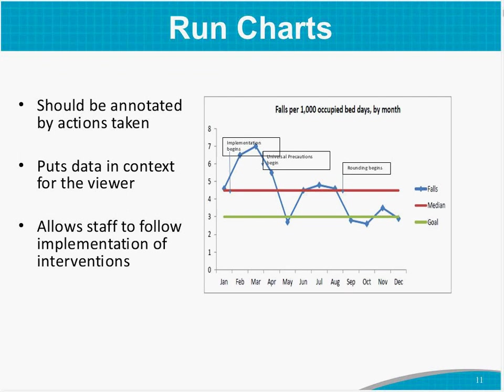Now Kelly will begin the introduction to control charts. Run charts simply display a series of data over time — individual data points are plotted and connected to demonstrate they occurred in order. Run charts can determine whether a process is changing, including whether it's responding to a quality improvement initiative. There's typically a summary measure like the median plotted, and often a goal is plotted as well. It can be helpful to annotate your run charts — noting when you implemented interventions. Run charts can show trends, variability, and whether results are sustained over time.